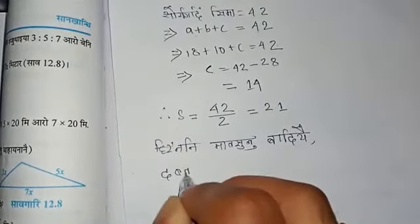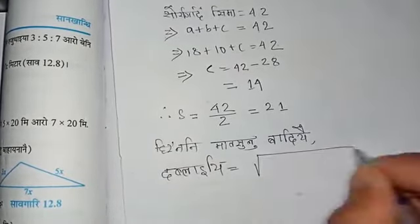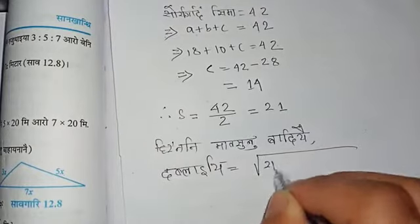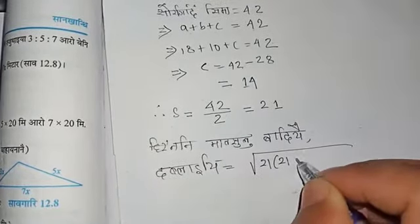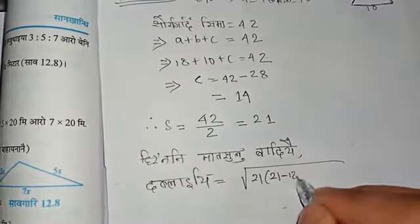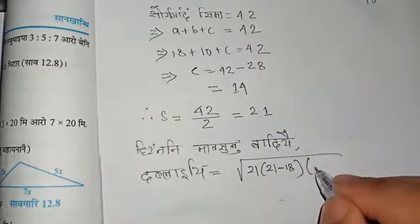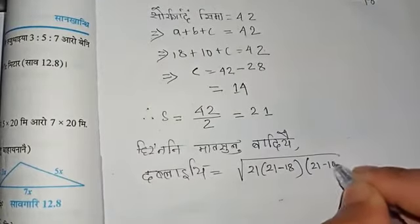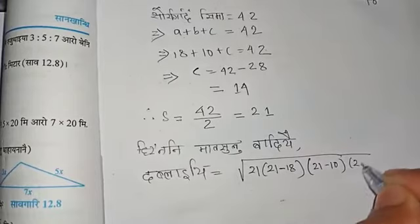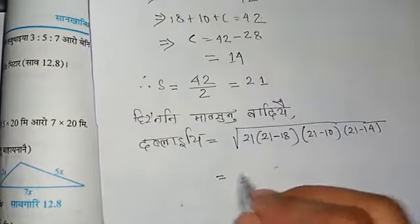S is 21. S minus a is 21 minus 18, which is 3. S minus b is 21 minus 10, which is 11. S minus c is 21 minus 14, equals 7.